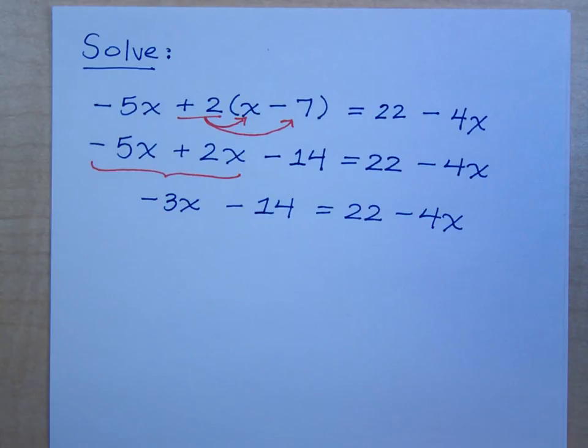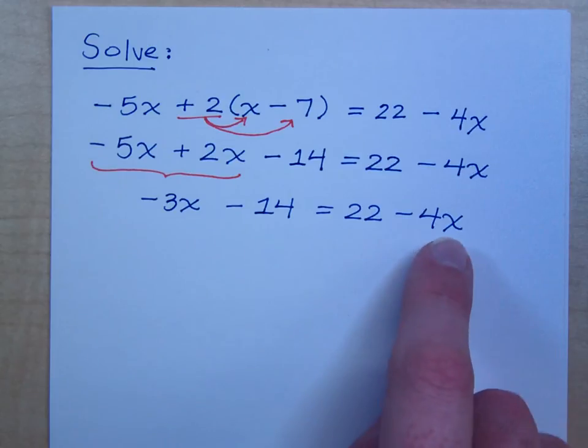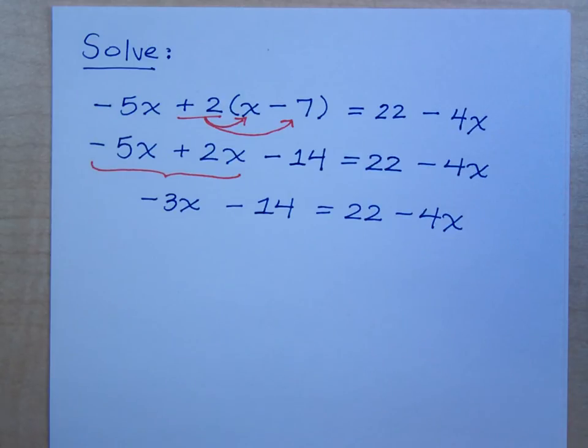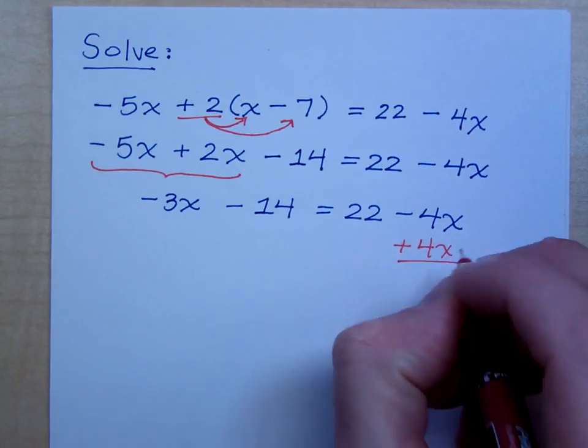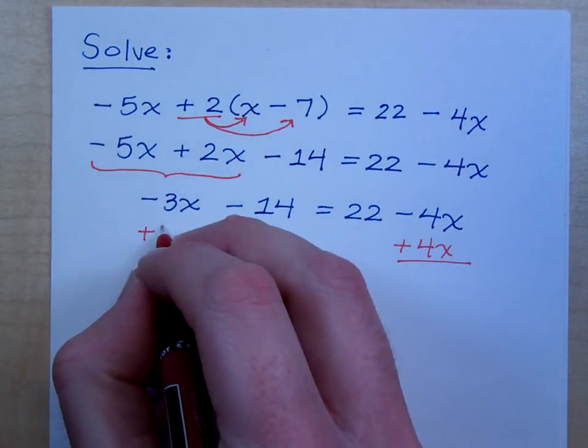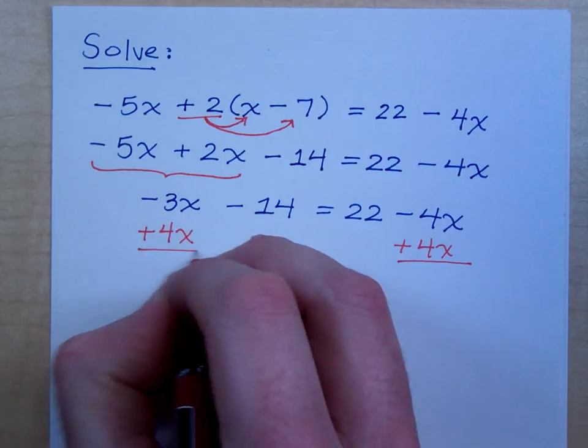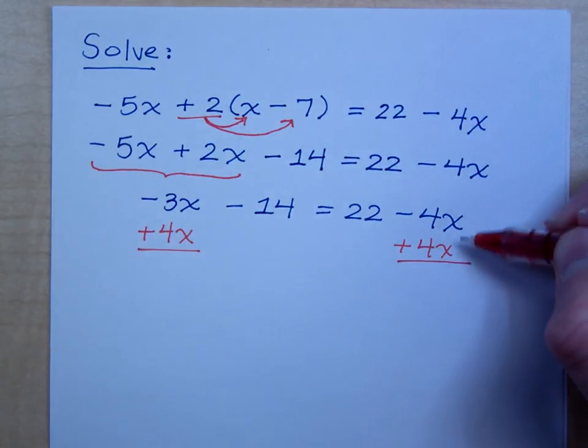I would move the 4x, and so this is minus 4x, and what's the opposite if I'm going to move it to the other side? I'm going to add 4x. And when I add 4x to the left side, you put it underneath its like term, the negative 3x. So, what's negative 3x plus 4x?